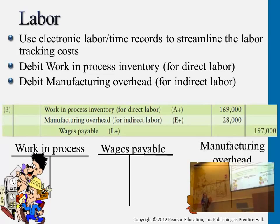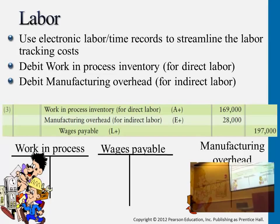Just like direct materials, we have two categories for labor: direct and indirect. The direct cost falls under the work-in-process category. We have $69,000 here, and $28,000 in manufacturing overhead costs. These two together, according to wages payable, mean we now owe them a total of $297,000.